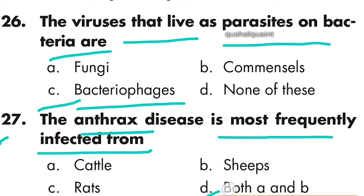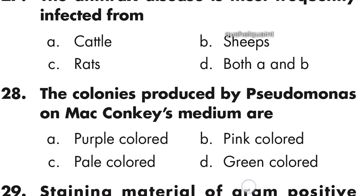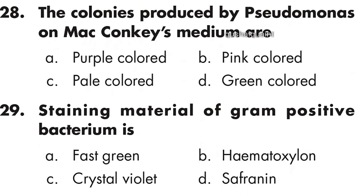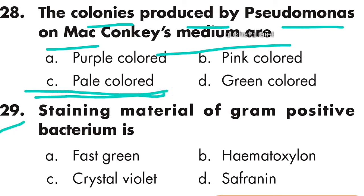Question 28: The colonies produced by Pseudomonas on MacConkey medium are pale colored — option C is correct.